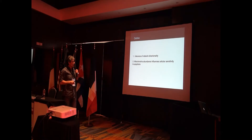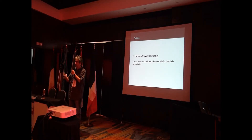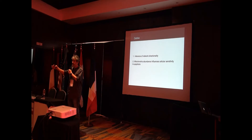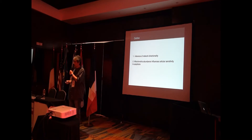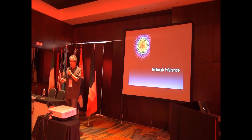And then we'll discuss how the abundance of organelles — like mitochondria in the case we are going to discuss — changes the decision for cell death by apoptosis in different cells. If different cells have different amounts of mitochondria, then they might go to apoptosis at different times, and we want to quantify that. Let's first talk about network inference.